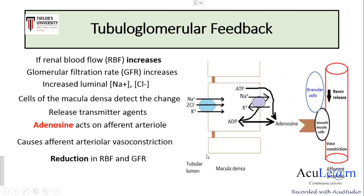In the figure, the macula densa and the afferent arteriole are shown. When there is an increase in sodium chloride concentration in the tubular lumen, this enhances the uptake of sodium chloride across the apical membrane of the macula densa cells via the sodium-potassium-2-chloride symporter. This leads to increased release of ATP and adenosine from the macula densa cells. This adenosine then acts on adenosine receptors on the smooth muscle cells of the afferent arteriole.